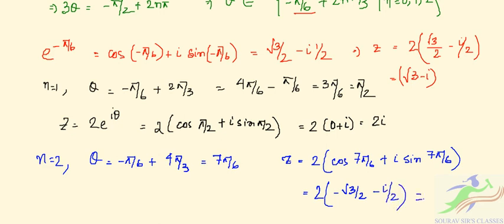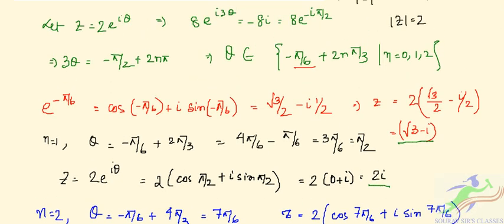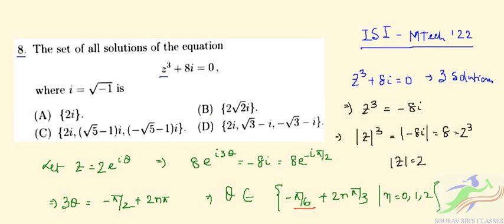This gives z = -√3 - i. So the three roots are √3 - i, 2i, and -√3 - i. Checking with the options, option D is the correct answer for question number 8.